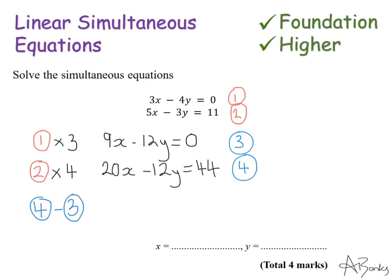So this gives me 11x. And then here I've got minus 12y take away minus 12y. So the two negatives make a positive. So I've got minus 12y add 12y which is 0. You should always at this step be eliminating your y's if you've done this step correctly. So then equals and 44 add 0 is 44. So x is 4. So x is 4.